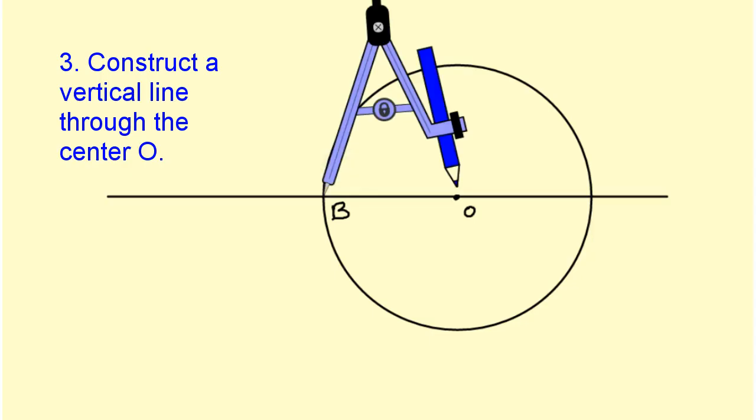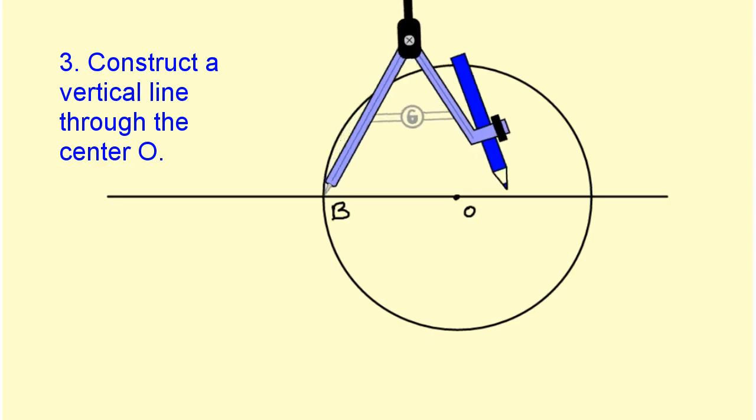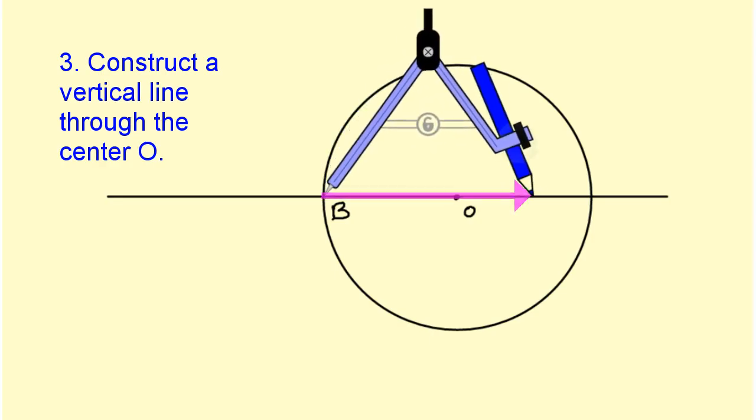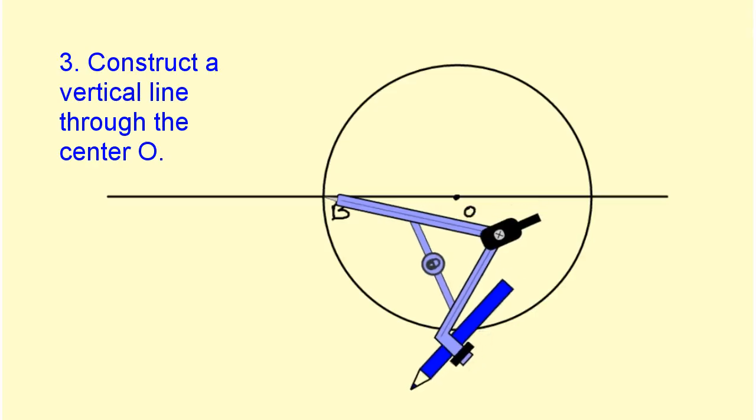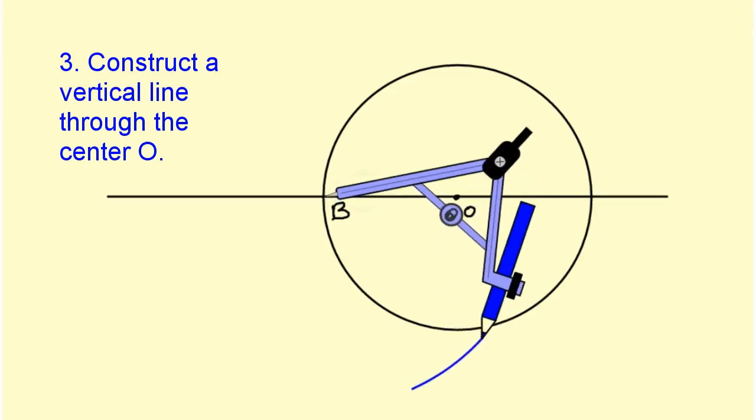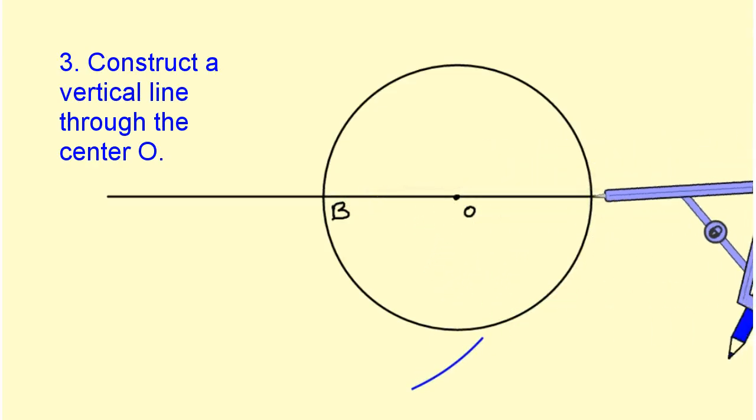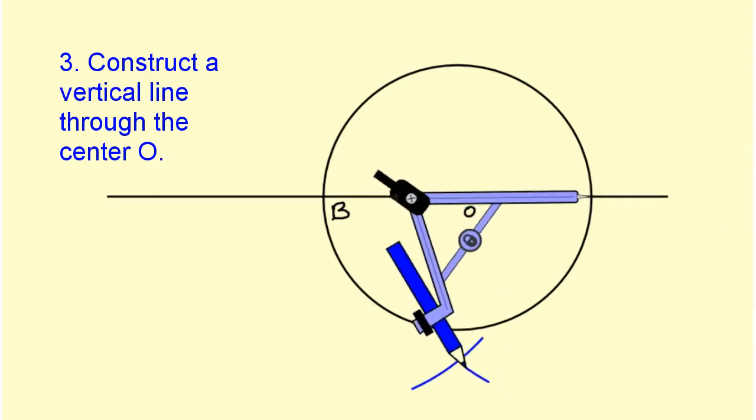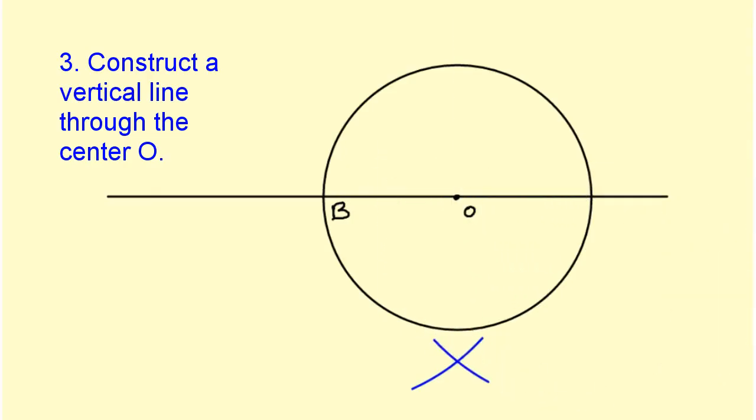So I'm going to take my compass and put the point at point B, and we're going to make sure to open up our compass over halfway between the two endpoints of the diameter. I'm going to rotate my compass down and mark off arcs from both endpoints. Now I will draw the line through point O and the intersection of my two arcs to get the perpendicular line.